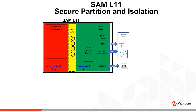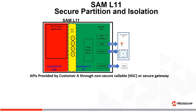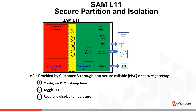Customer A securely isolates the library in the trusted zone, along with peripherals including RTC, GPIO, and SERCOMs that are necessary for a typical temperature sensor application. Customer A also provides APIs to Customer B via the non-secure callable — also called a secure gateway — to enable app development. These APIs include configuring RTC wake-up time periodically, toggling an LED on the IO1 Xplained Pro kit, reading and displaying temperature, and requesting to enter standby sleep mode.